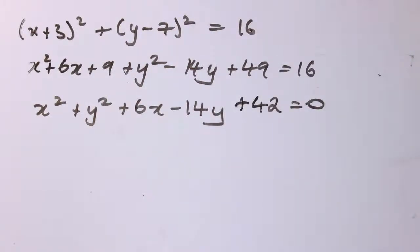So if you get something that has this sort of form, it's got an x squared term, a y squared term, an x term, a y term and a constant term, then it might be a circle.